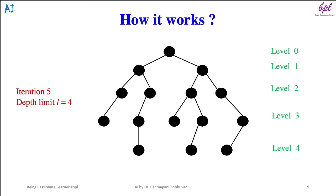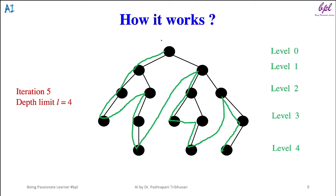In the fifth iteration, L will be four and nodes will be explored in that sequence. If the goal node is found, the algorithm will terminate here; if not found, L will be increased by one.